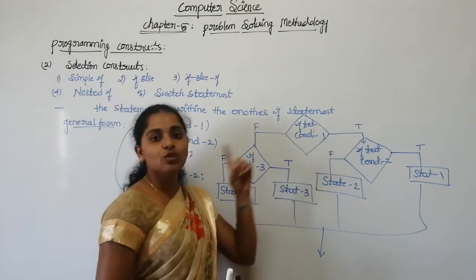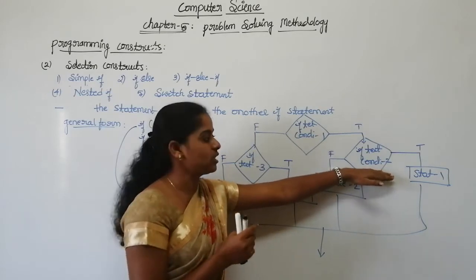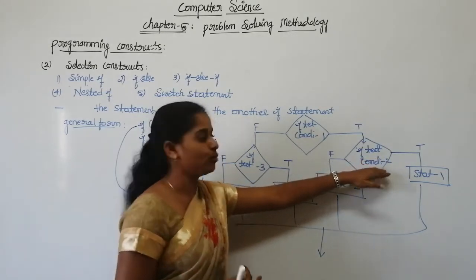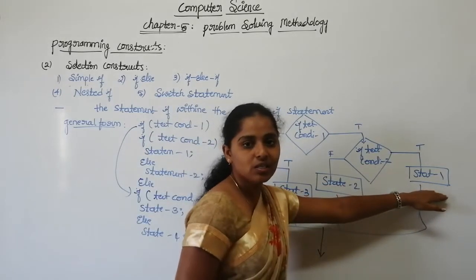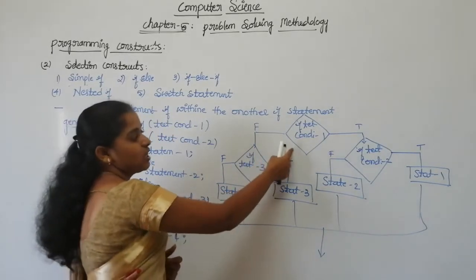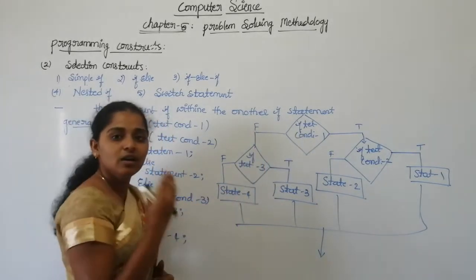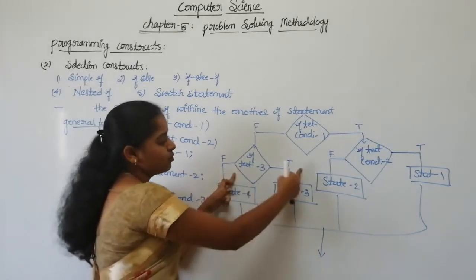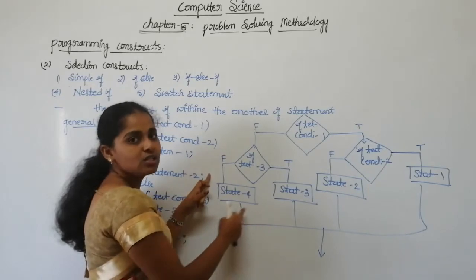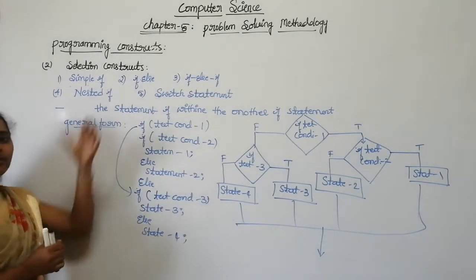To summarize: nested if means an if statement placed within another if statement. If test condition one is true, test condition two is tested — if true, statement one executes; if false, statement two executes. If test condition one is false, test condition three is tested — if true, statement three executes; if false, statement four executes.